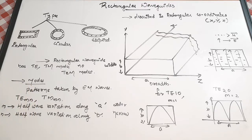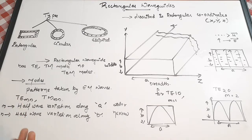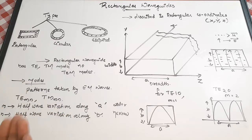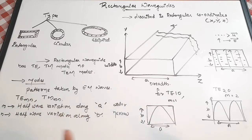Hello and welcome to Easy Electronics. Today in this video we are going to see about rectangular waveguides, which is one of the difficult topics in electromagnetic theory. We are going to simplify the topic to the exam point of view. Before going into rectangular waveguides, let's understand what waveguides actually are. Waveguides are linear structures that convey electromagnetic waves between their endpoints — they are used to transmit electromagnetic waves from one point to another.